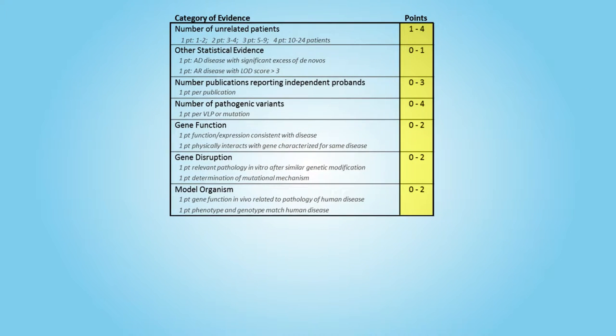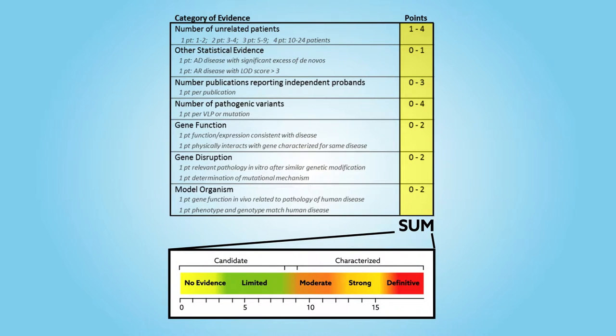By awarding a score for each category and adding these values, they can tell whether there is strong, moderate, or weak evidence relating a gene to a disease.